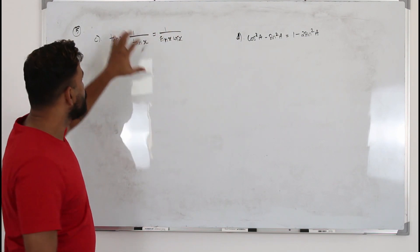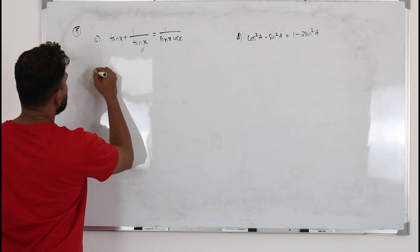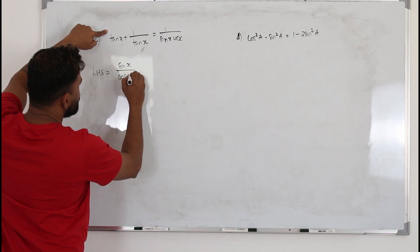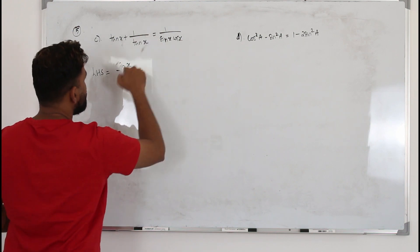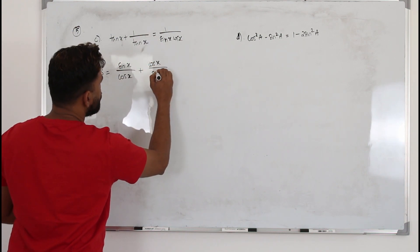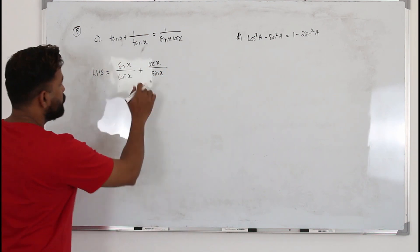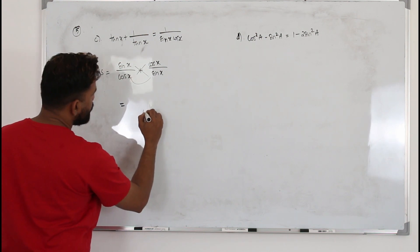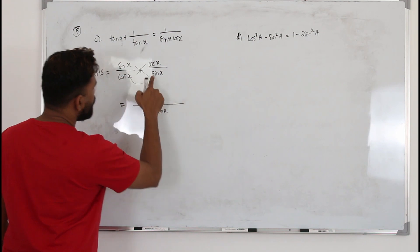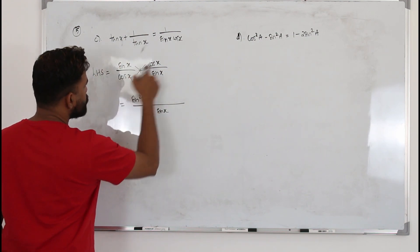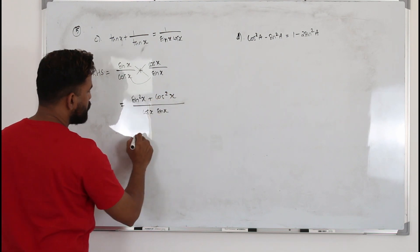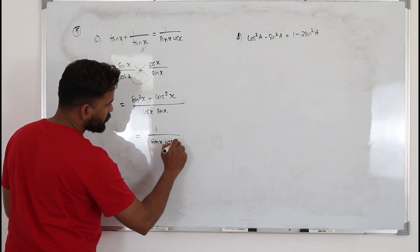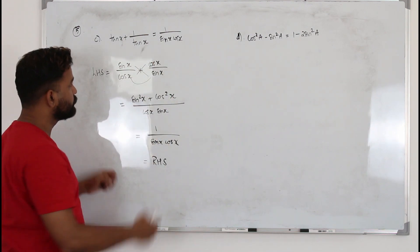For question 5c, we need to prove the identity. Start with the left-hand side. Write tan x as sin x over cos x using the first identity, so 1/tan x is cos x over sin x. Adding these two fractions, cross-multiply to get a common denominator of cos x · sin x. The numerator becomes sin²x + cos²x, which equals 1 by the second identity. So the result is 1/(sin x cos x), which matches the right-hand side.